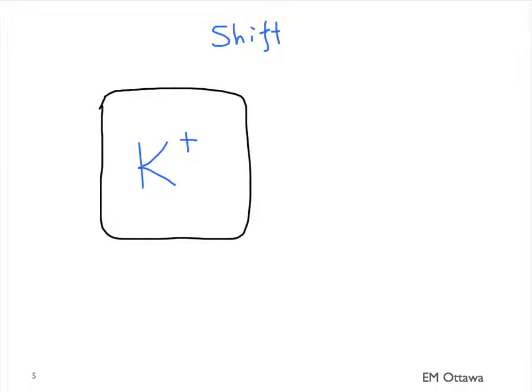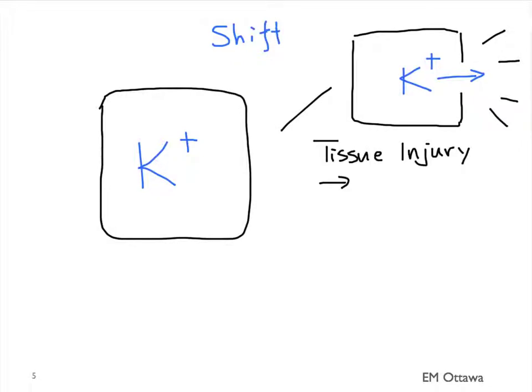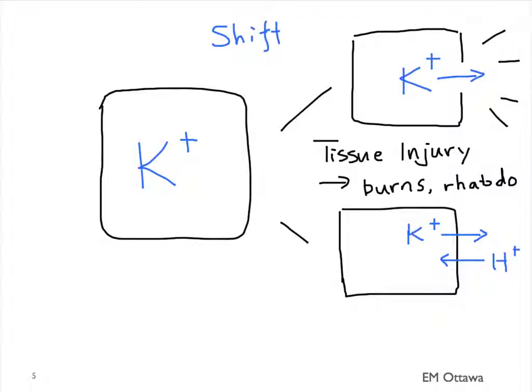What are the causes for hyperkalemia? We will look at shift and renal clearance. First, shift. Potassium is a mostly intracellular ion. The serum potassium level will go up if there is leakage of potassium from the cells. It can be caused by tissue injury such as burns and rhabdomyolysis. Potassium can also get out of the cells in exchange for another ion getting into the cells. Specifically in acidosis, hydrogen ion will enter the cell while potassium will get out of the cells.